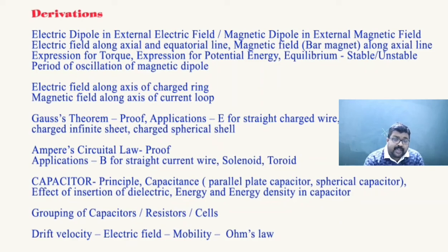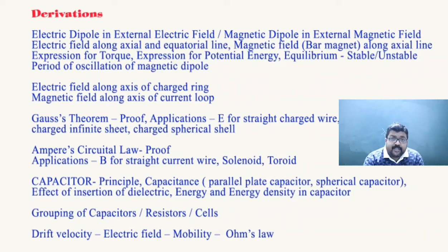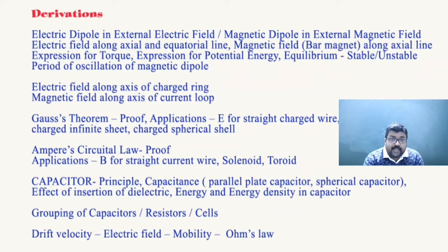Gauss's Theorem — proof and application for electric field from various charge distributions. Similarly Ampere's Circuital Law — proof and applications for magnetic field from various current distributions. Then the capacitor: principle of capacitor, calculation of capacitance of a parallel plate capacitor and spherical capacitor. Effect of inserting a dielectric — both after disconnecting from the source and while the source remains connected — including changes in potential, electric field, and potential energy. Grouping of capacitors, grouping of resistors, and grouping of cells in series and parallel, including mixed grouping of cells and the condition for maximum current.